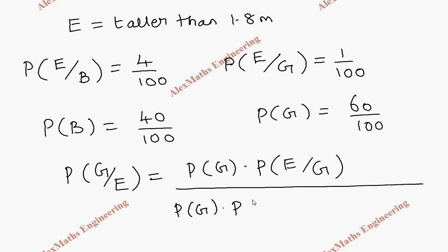P of G into P of E by G plus. And we have to write for the other, that is, boy. P of B into P of E by B.